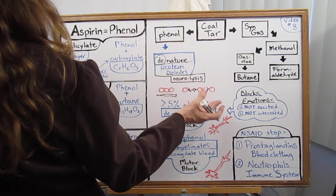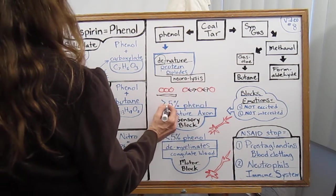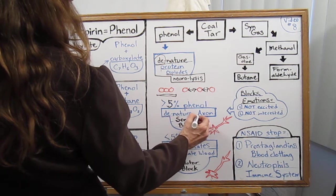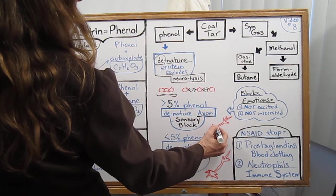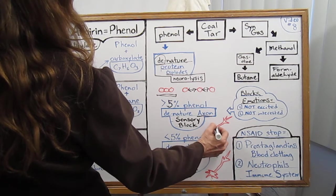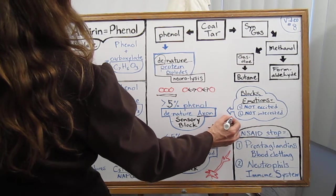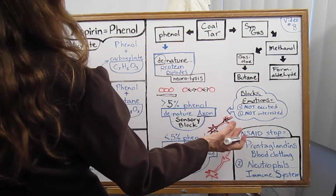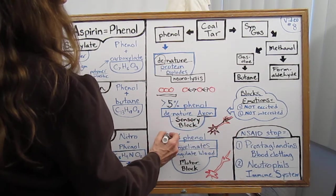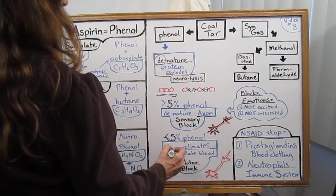So less than five percent phenol, you're denaturing the axon. Here is an axon, here's the dendrites - these are the ears, the many ears of the cell, and then the one voice, the axon. And it is not working so well - it is a sensory block.